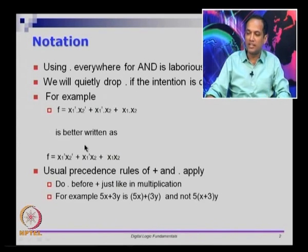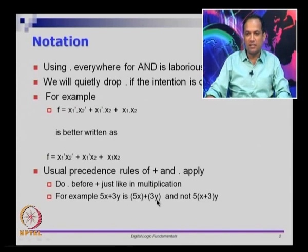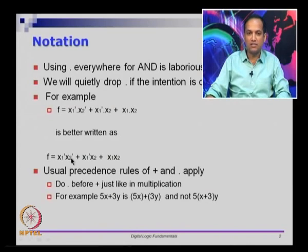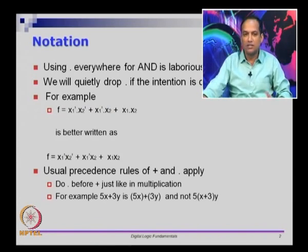We drop the dot when the intention is clear, but you have to remember the usual precedence rules. If you have a plus and an expression with an implied dot, be careful about precedences. In basic algebra if you have 5x + 3y, you interpret that as (5x) added with (3y). The same rule applies here — when you read an expression, it is x1 complement AND x2 complement logically OR'd with x1 complement AND x2. Sometimes we will use parentheses explicitly; otherwise use the basic rules of precedence from algebra.